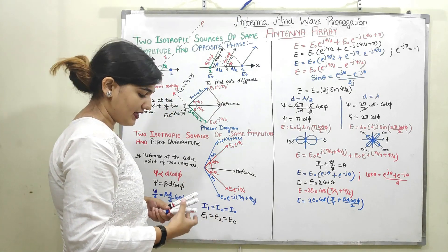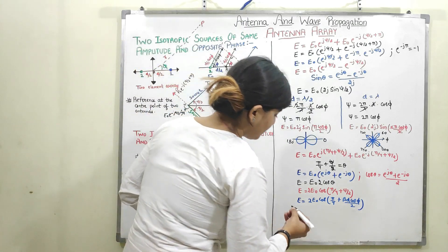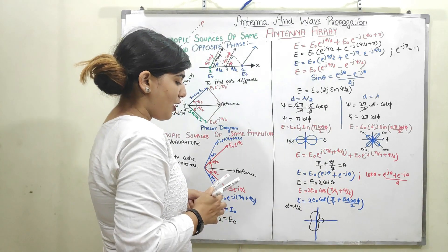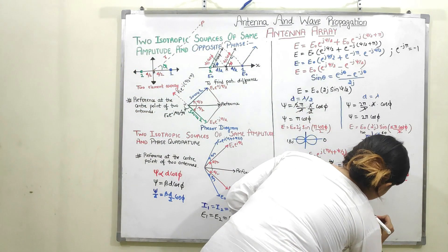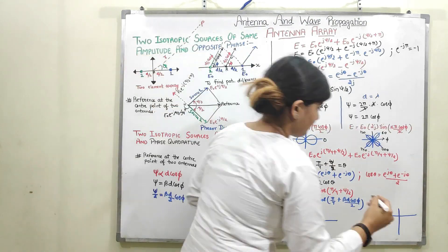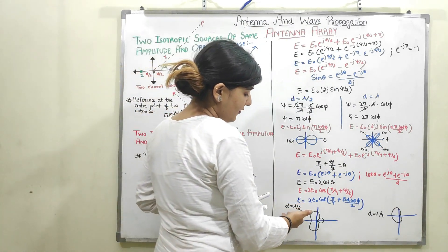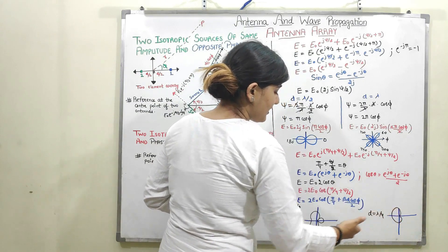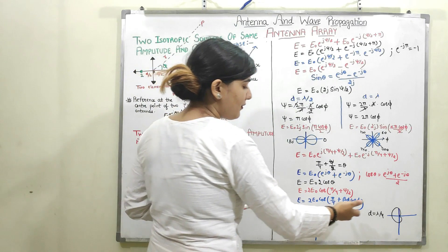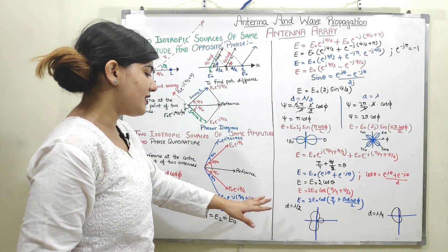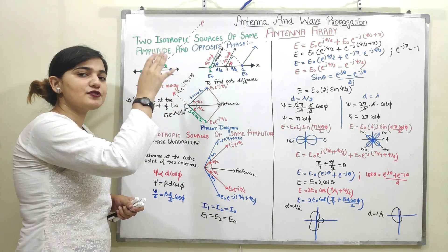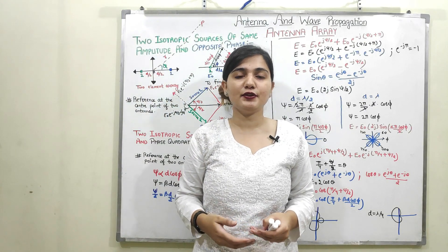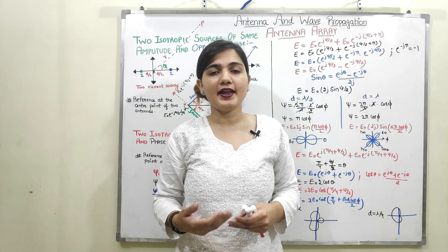I will put various values of d into this equation. When d = λ/2, I get a specific radiation pattern. When d = λ/4, the radiation pattern looks like a cardioid. By varying different values of phi to find the radiation pattern, I get different radiation shapes for d = λ/2 and d = λ/4. This is how we find the final radiation pattern of two isotropic point sources of same amplitude and opposite phase, and same amplitude and phase quadrature.